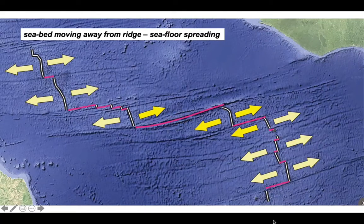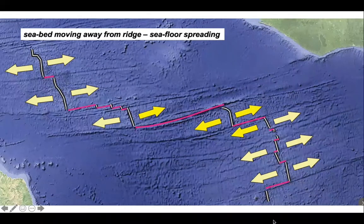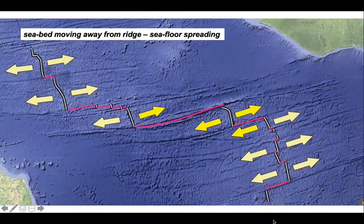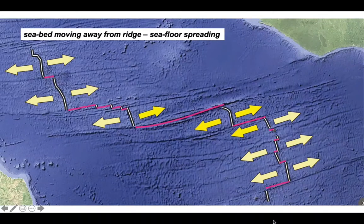What we've done is illustrate that the seabed is moving away from the ridge, indicating seafloor spreading. So although we've used modern data, we've used the logical arguments developed in the 1960s that were part of the evidence to deduce that seafloor spreading existed — a fundamental concept in plate tectonics.